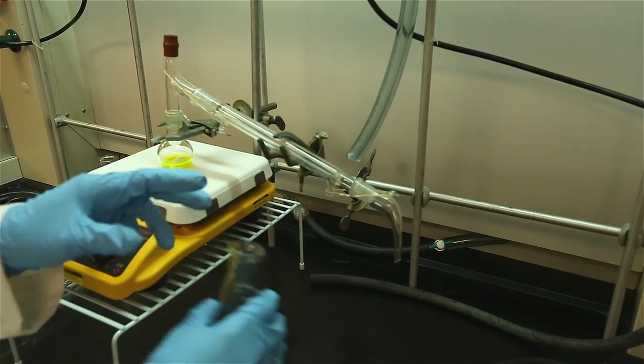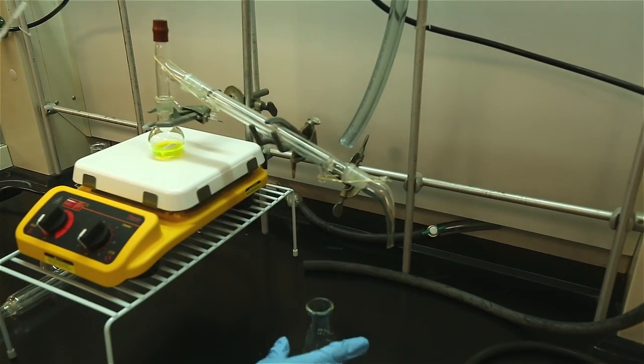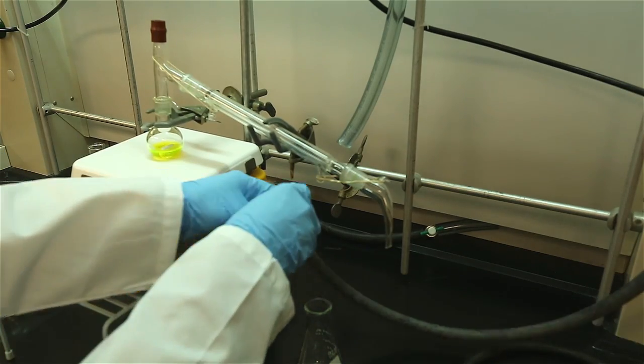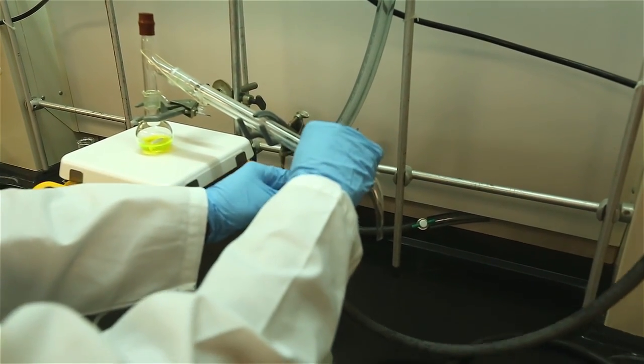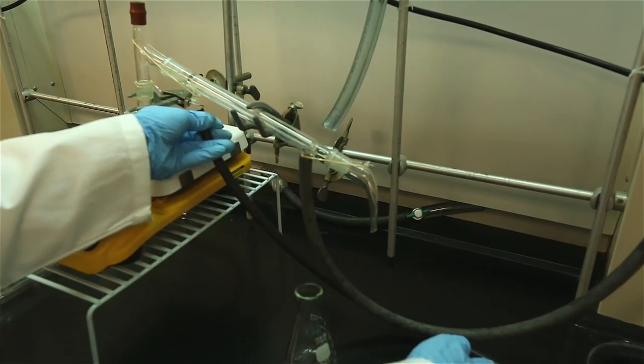Be sure to add a boiling aid to eliminate violent splashes caused by bubbling of a superheated solution known as bumping. If you forgot to add in a boiling aid, remove the solution from heat and allow it to cool to room temperature before adding the boiling aid.